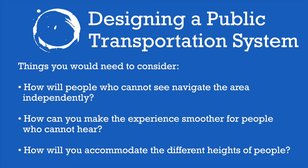Some other things to consider are: how will people who cannot see navigate the area independently? How can you make the experience smoother for people who cannot hear? How will you accommodate the different heights of people? I challenge you to think about these things, research them, and pay attention next time you are using a public system or even a product in your own home. Do you notice some of the features discussed in this video? Do you notice any others that address universal design very well? Are there features that make this design particularly easy for you to use, but that would also make the design easy to use for somebody that has special needs different than your own?